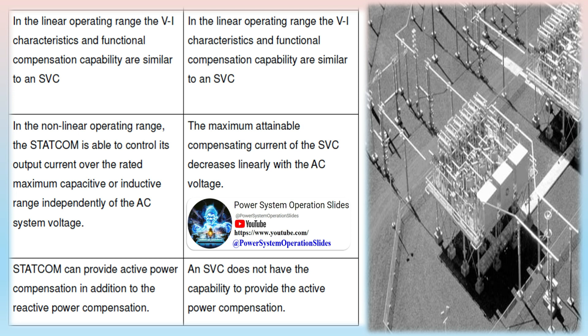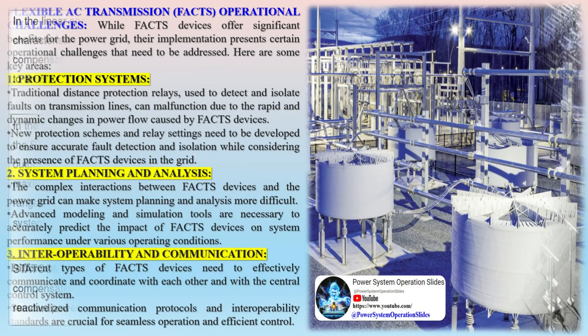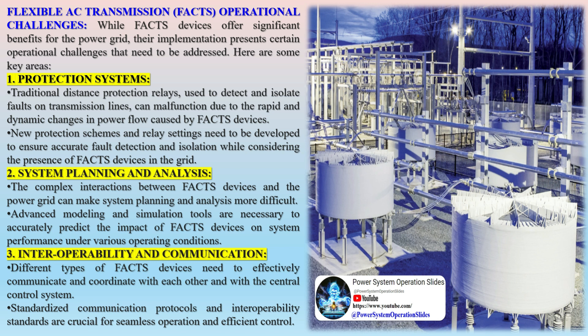Regarding system planning and analysis, the complex interactions between FACTS devices and the power grid can make planning and analysis more difficult. Advanced modeling and simulation tools are necessary to accurately predict the impact of FACTS devices on system performance under various operating conditions. Additionally, different types of FACTS devices need to effectively communicate and coordinate with each other and with the central control system. Standardized communication protocols and interoperability standards are crucial for seamless operation and efficient control.